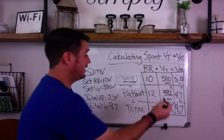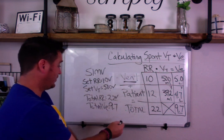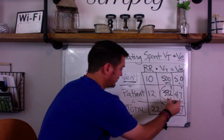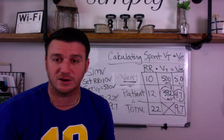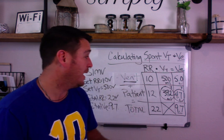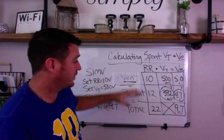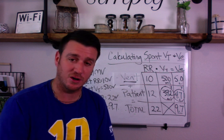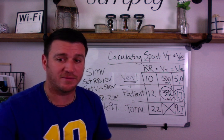So the answer: set rate 10, tidal volume 500, total rate 22, total VE 9.7 — spontaneous tidal volume is 392 mL, spontaneous minute volume is 4.7 liters. The tool to remember: respiratory rate times tidal volume equals minute ventilation, and vent plus patient equals total. Build the grid, fill in the boxes, and it works every single time. Hope this helps, Fallon — if I didn't answer your question, let me know!